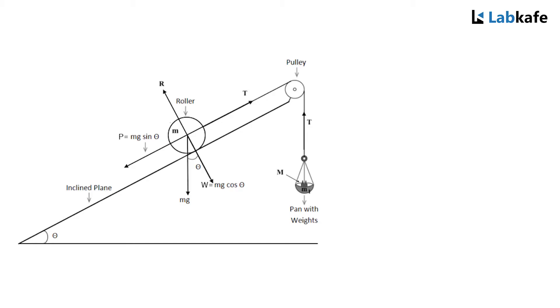Now for a given inclination angle theta, if we add more weights on the pan, the roller will move upward with constant velocity due to the force w1 on the roller. The mass m1, the total mass m1, equals to mass of the pan plus added mass in the pan.